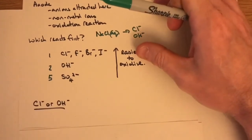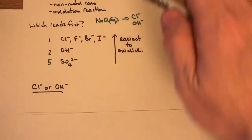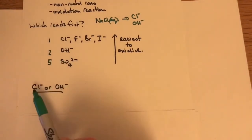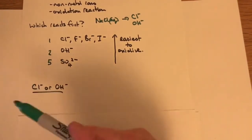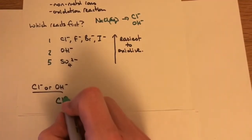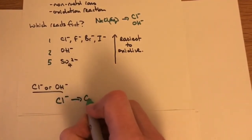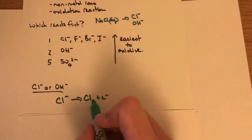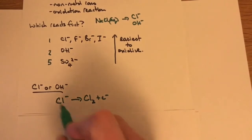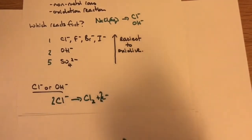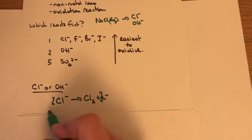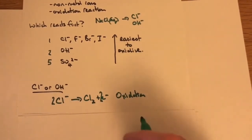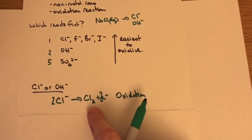In our example with chloride ions and hydroxide ions: chloride has one part, hydroxide has two parts, so the simplest goes first — it's the chloride ion. The reaction is Cl⁻ undergoing oxidation, losing its electron. Chlorine is diatomic, so we need two chloride ions releasing two electrons. This loss of electrons is oxidation, so the chloride ion reacts first at the anode.